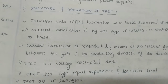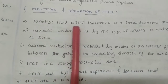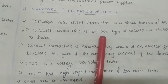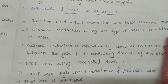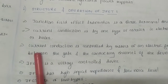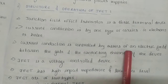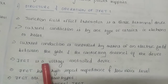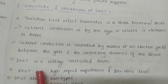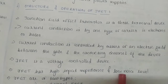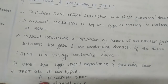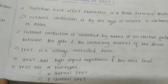In the structure and operation of JFET — junction field effect transistor — it is a three-terminal device. Current conduction is by one type of carrier, that is electrons or holes. The current conduction is controlled by means of an electric field between the gate and the conducting channel. JFET is a voltage-controlled device with high input impedance and low noise level. JFET are of two types: N-channel JFET and P-channel JFET.